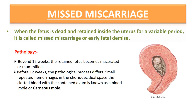Missed miscarriage occurs when the fetus is dead and retained inside the uterus for a variable period. The causes of prolonged retention are not fully clear. Beyond 12 weeks, the retained fetus becomes macerated or mummified. Before 12 weeks, the pathological processes differ — when the ovum is more or less completely surrounded by chorionic villi, small repeated hemorrhages inside the choriodecidual space form a carneous mole or blood mole.